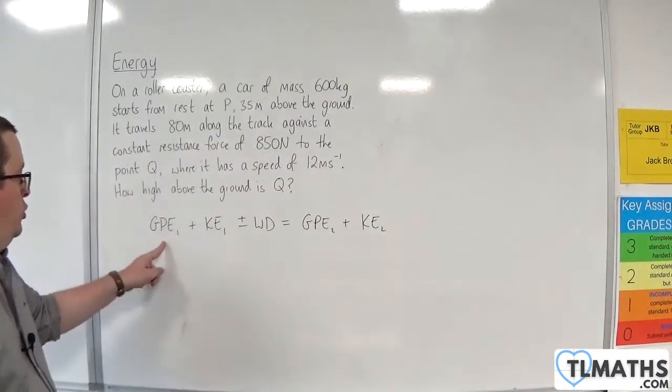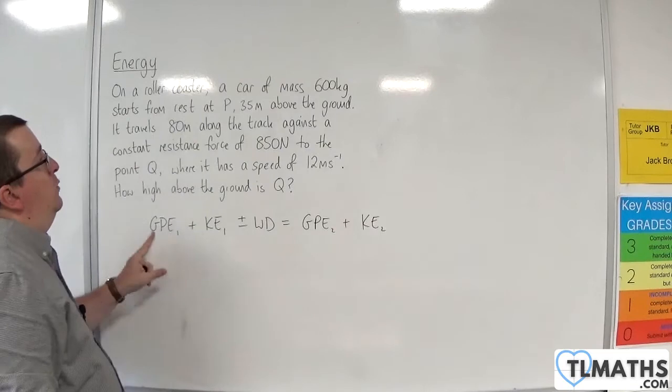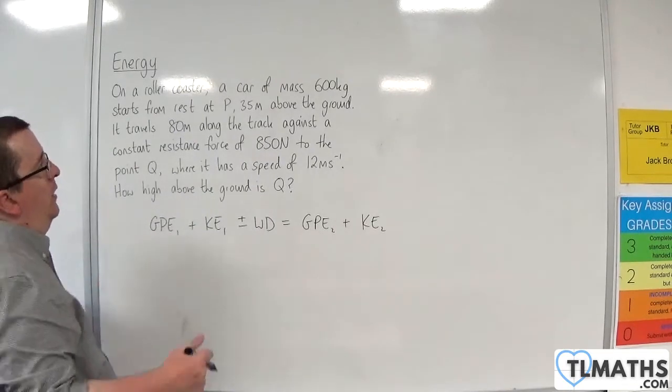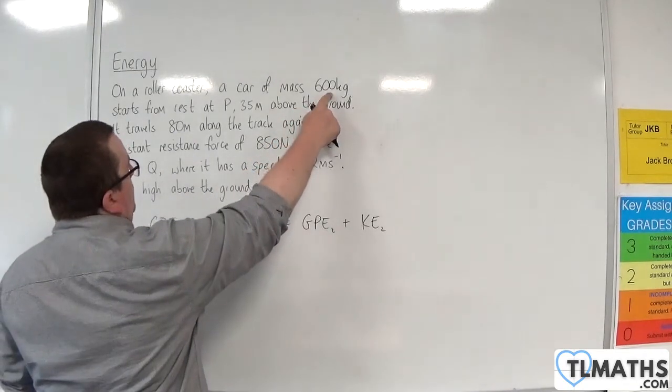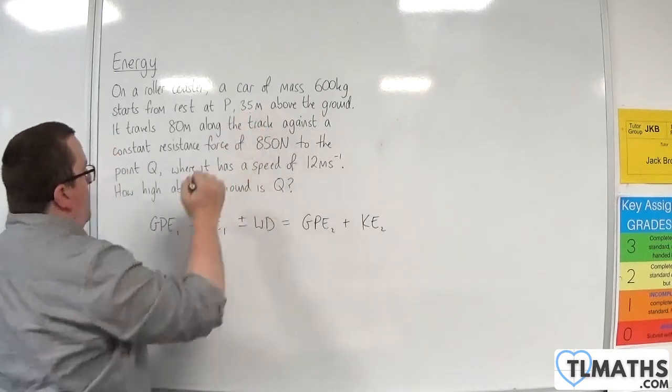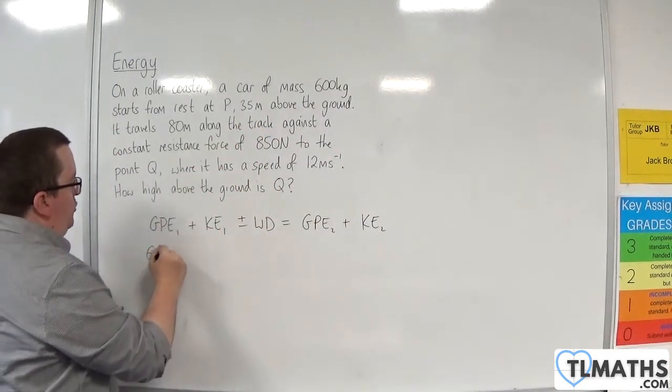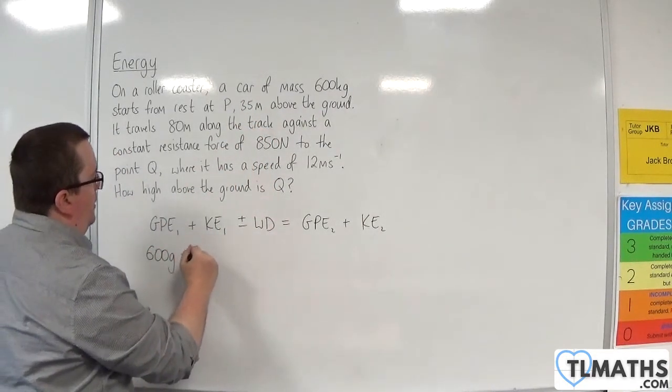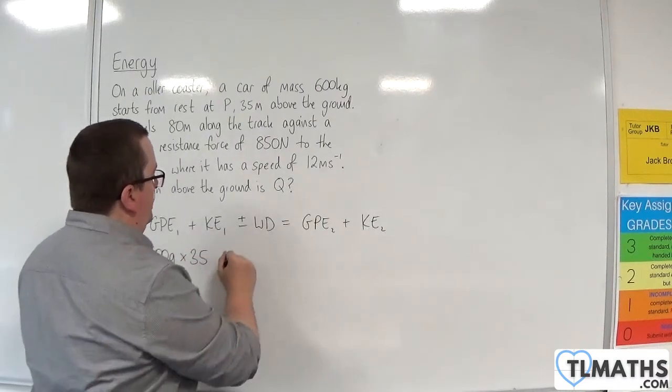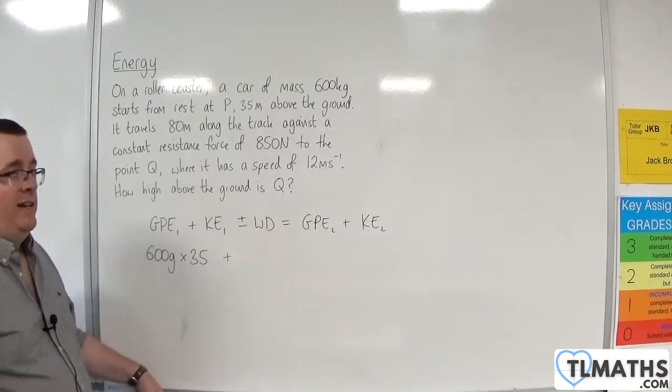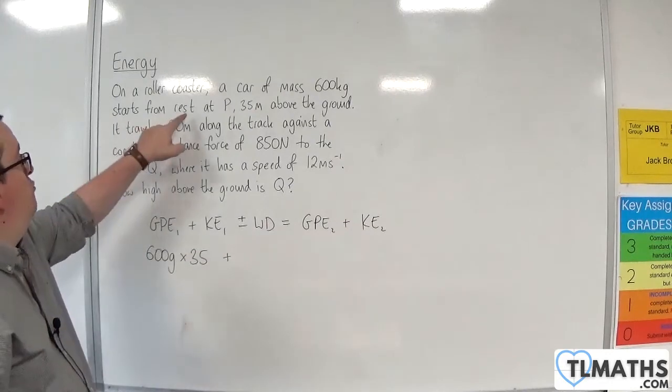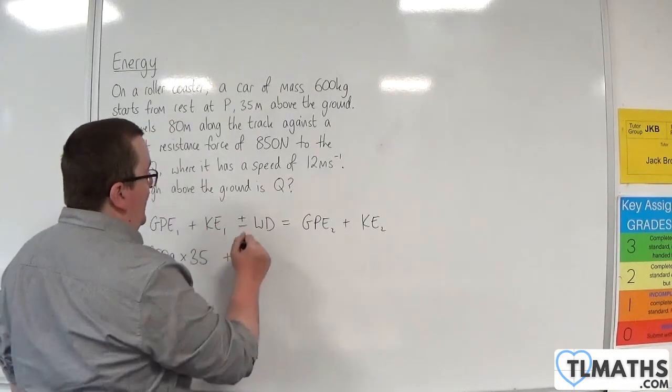Now, the initial gravitational potential energy will be MGH, and M is 600, and we're starting 35 metres above the ground. So 600G times by 35, plus the initial kinetic energy. Now, because it starts from rest, the initial kinetic energy will be zero.